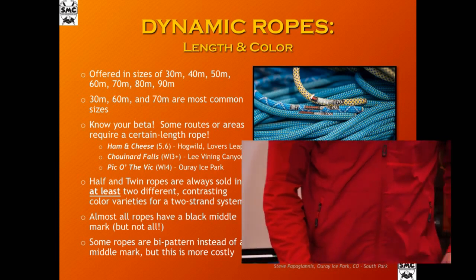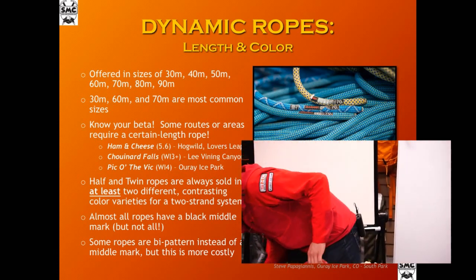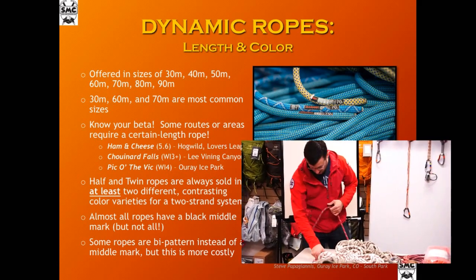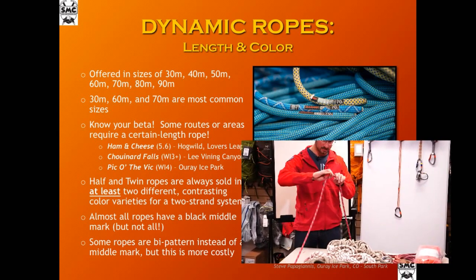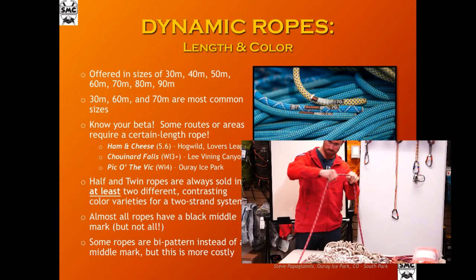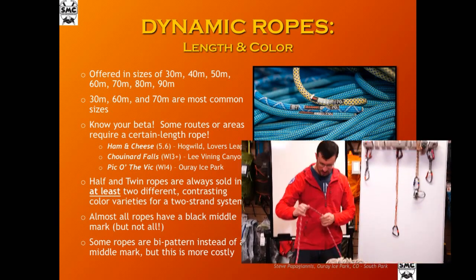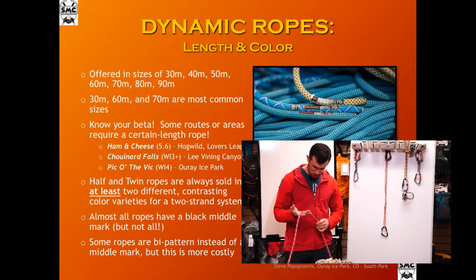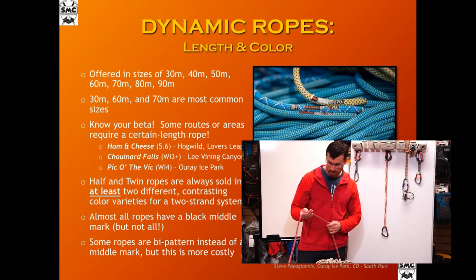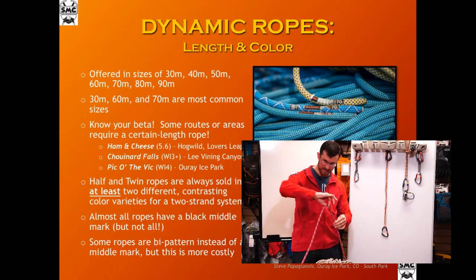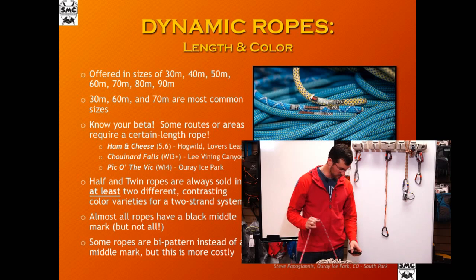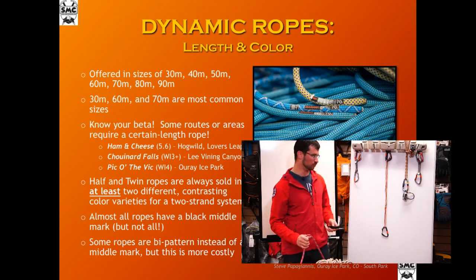Almost all ropes will have a black middle mark — usually very prominent, almost like a paint mark about a foot long, sometimes two marks. Some brands are more prominent than others. Some ropes use a pattern change partway through to denote the middle; those are more costly but very easy to use for finding the middle.